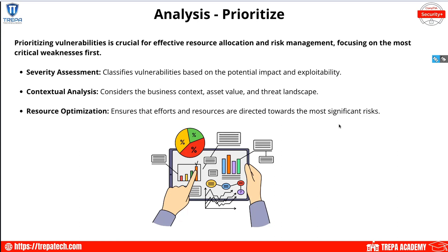Even though one is more severe, which do we address first? We need to prioritize based on our security objectives, business objectives, and assessment. We have to do a contextual analysis — consider our threat landscape, the value of that asset, and how it can affect the business. If a fix is low priority but requires a big lift and a lot of resources, maybe according to our risk appetite we don't fix it right now — maybe it goes in the backlog.